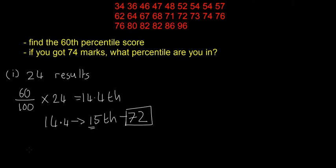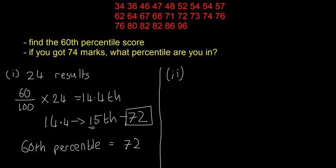And we find that 72 is the 15th number. So that means the 60th percentile is equal to 72. So it might seem a little bit odd, a little bit sort of difficult to follow, but really it's just something you just sort of have to learn how to do these two particular questions. That's what I found when I was doing the leaving anyway, that you just have to learn them.